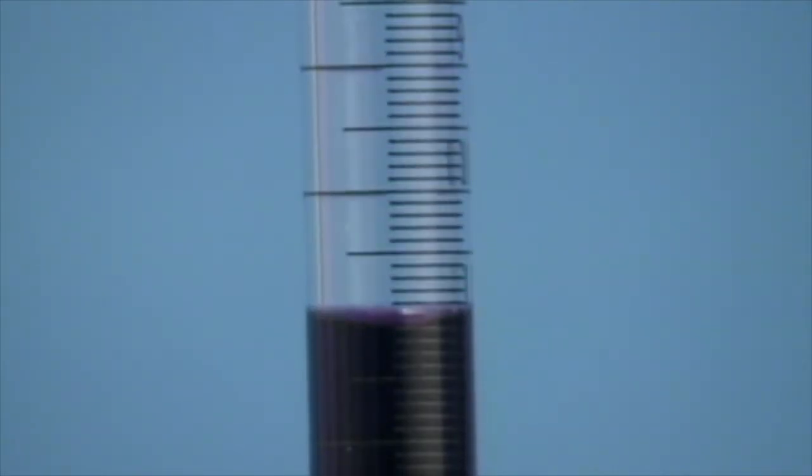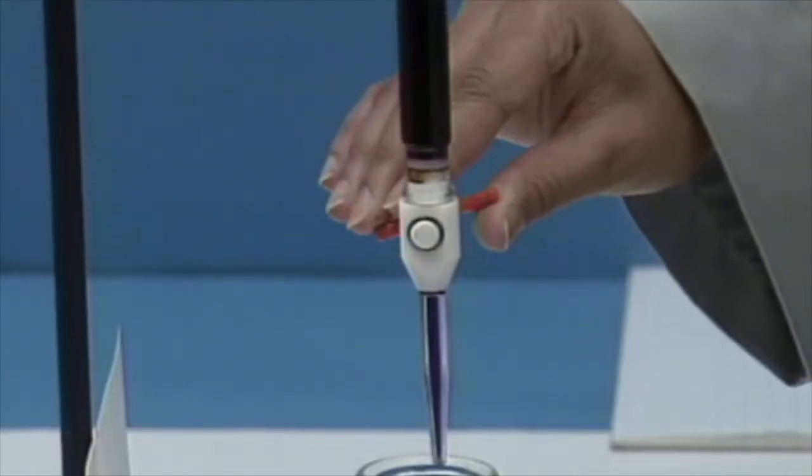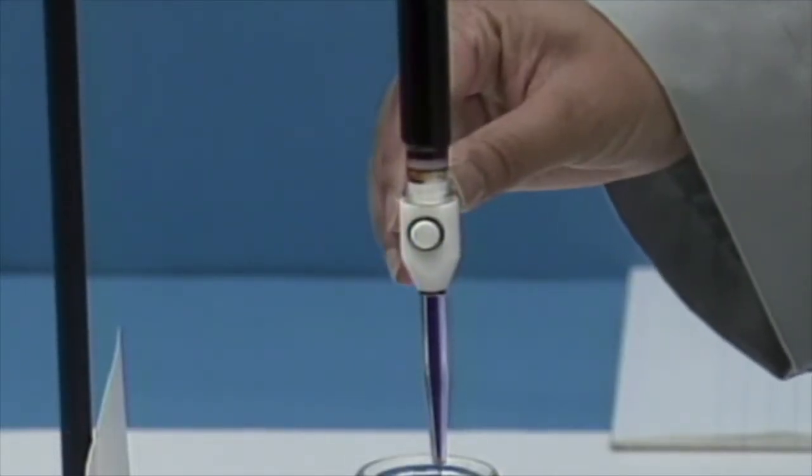The titrant is a purple solution. The titrant solution in the burette is added to the sample solution in the flask.